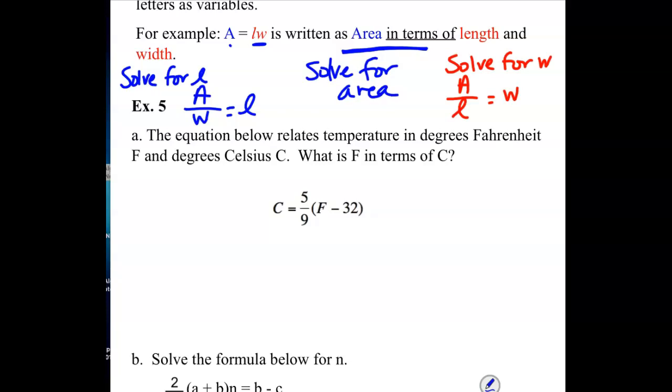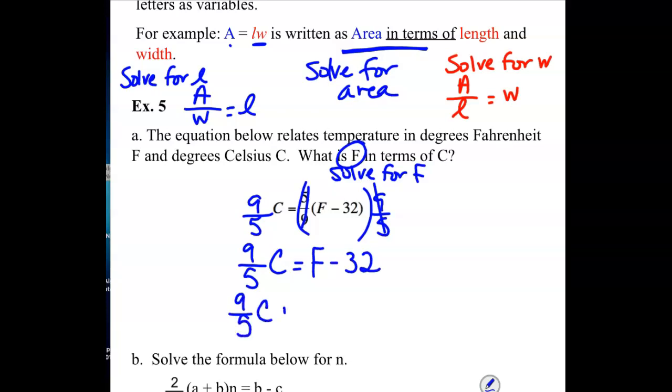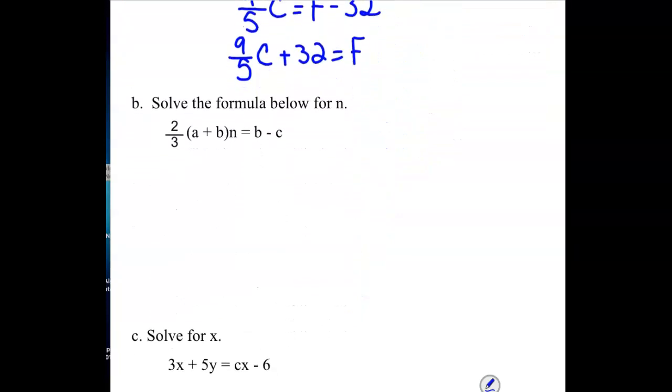So our next example deals with our converting formula to go from Celsius to Fahrenheit. It says the equation below relates temperature in degrees Fahrenheit, F, and degrees Celsius, C. What is F in terms of C? So we want to solve for F. We want it in terms of C. So we want F by itself and then the other side will have some expression with the C in it. So the first thing I'm going to do is get rid of this 5 ninths by timesing both sides by its reciprocal. So I have 9 fifths times C equals, and the 5 ninths and the 9 fifths cancel each other out, and I have F minus 32. And then I can simply add the 32 to the other side. And now I have my equation solved for Fahrenheit. In other words, Fahrenheit is written in terms of Celsius.